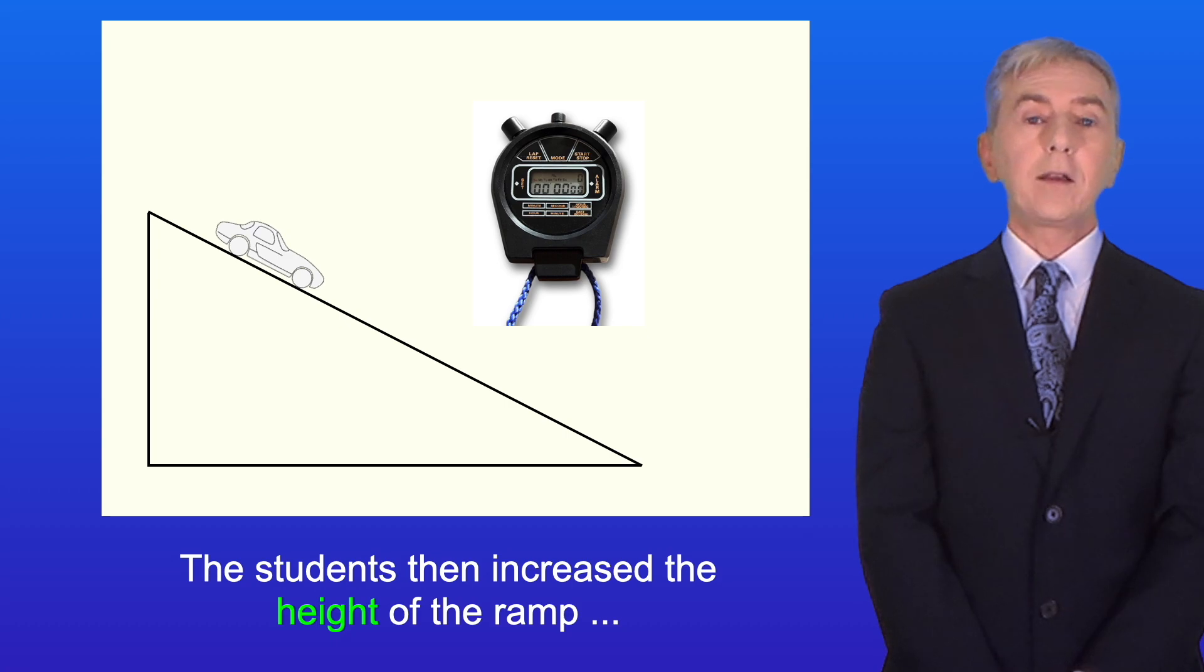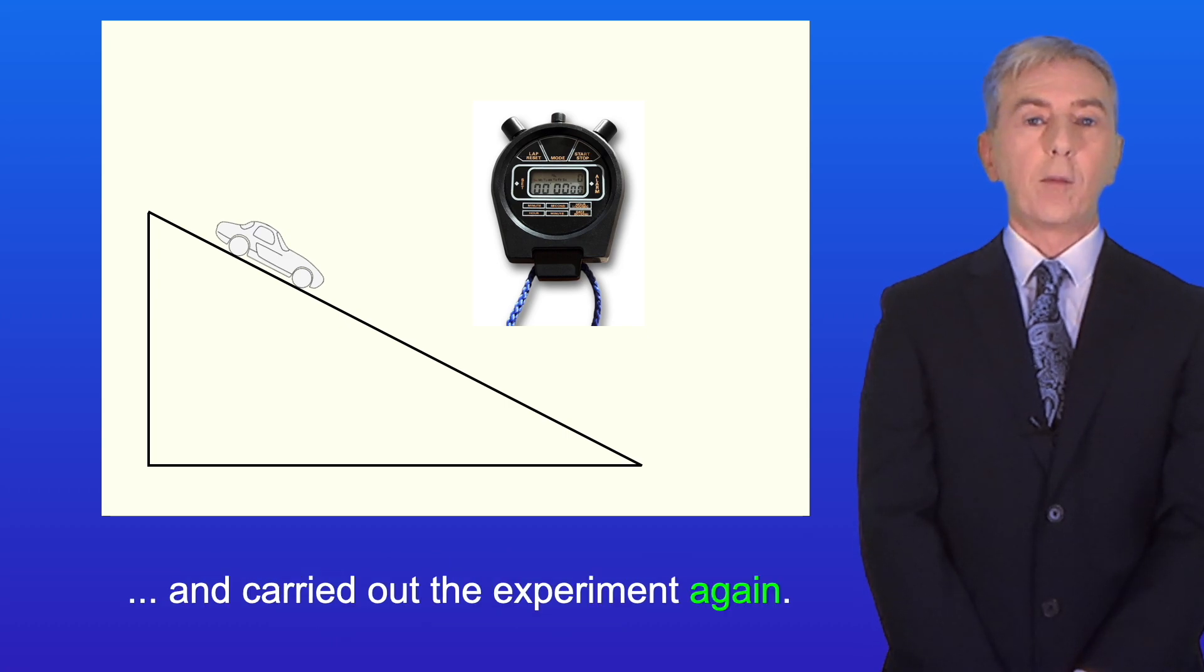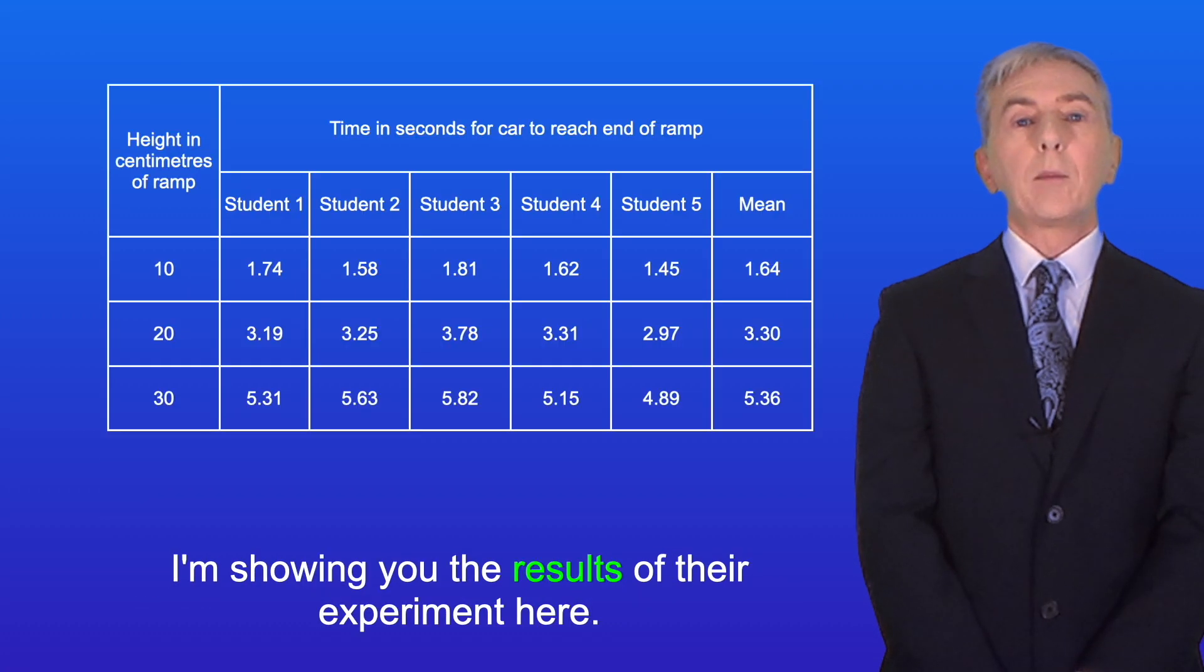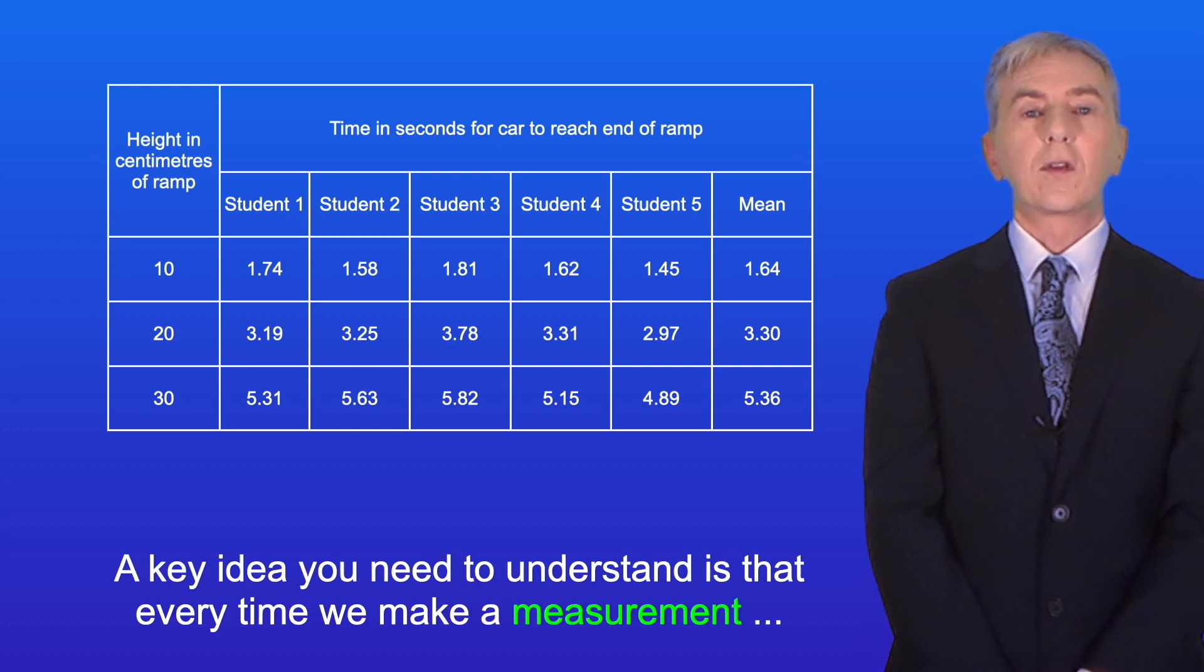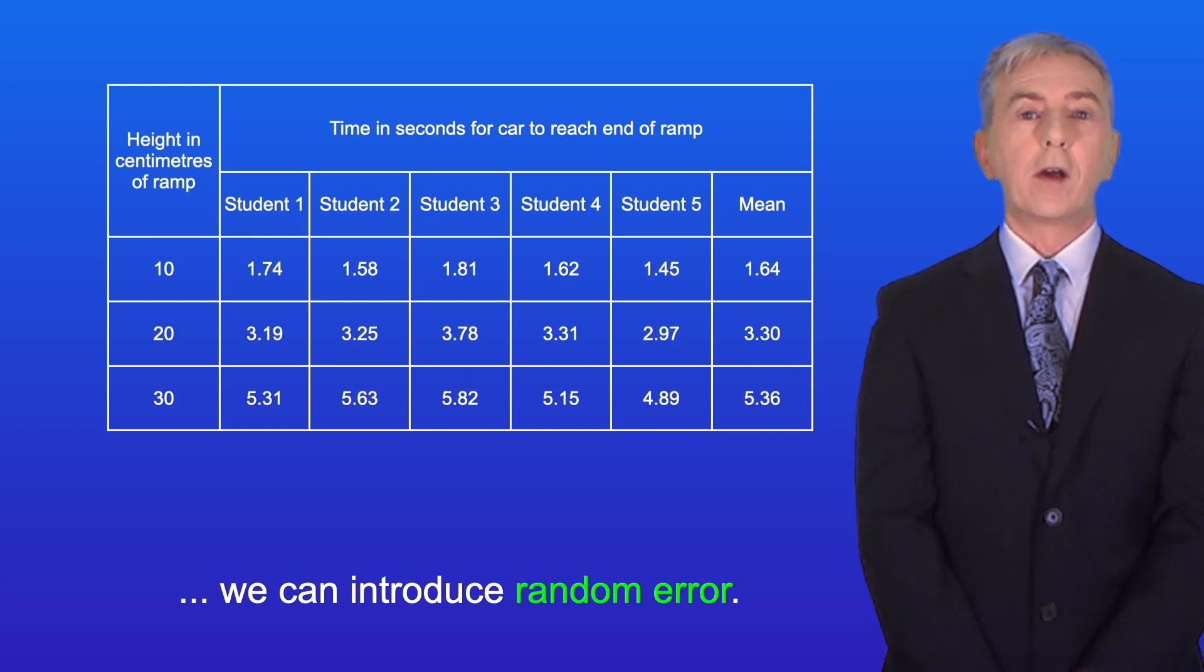The students then increased the height of the ramp and carried out the experiment again. I'm showing the results of the experiment here. Now a key idea you need to understand is that every time we make a measurement we can introduce random error.